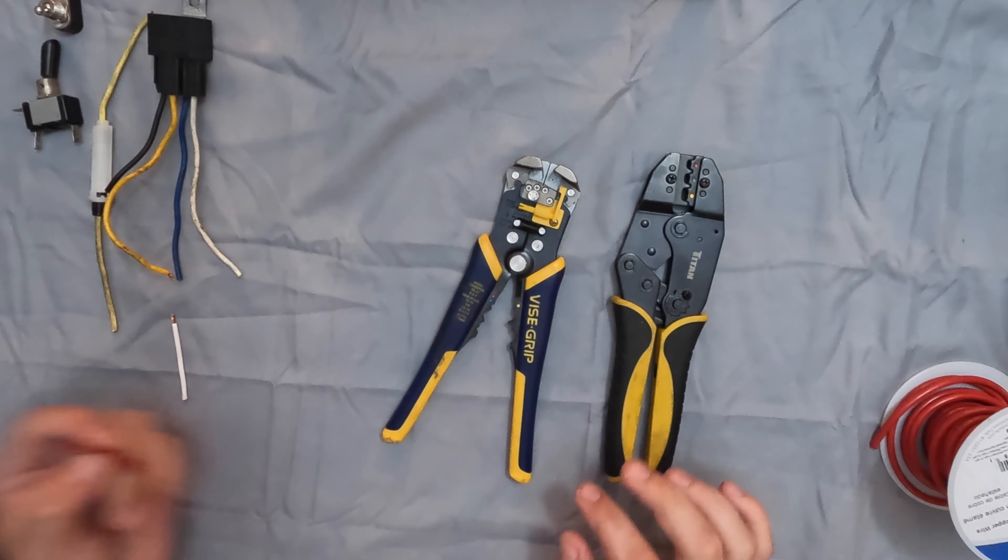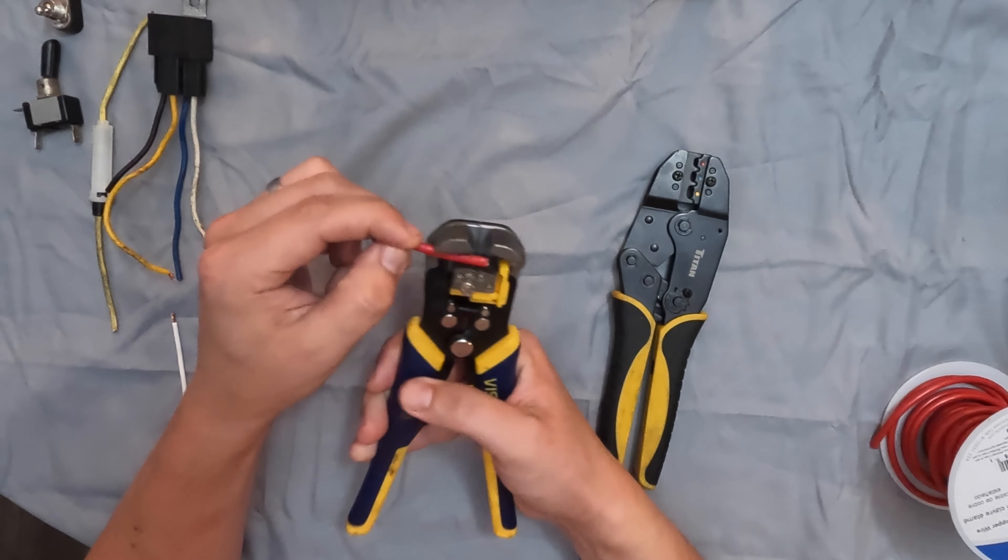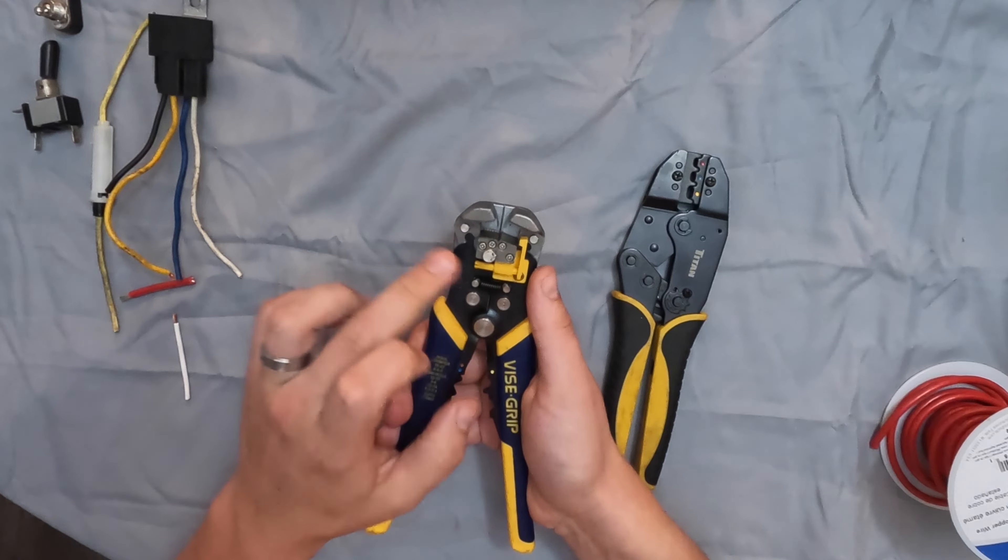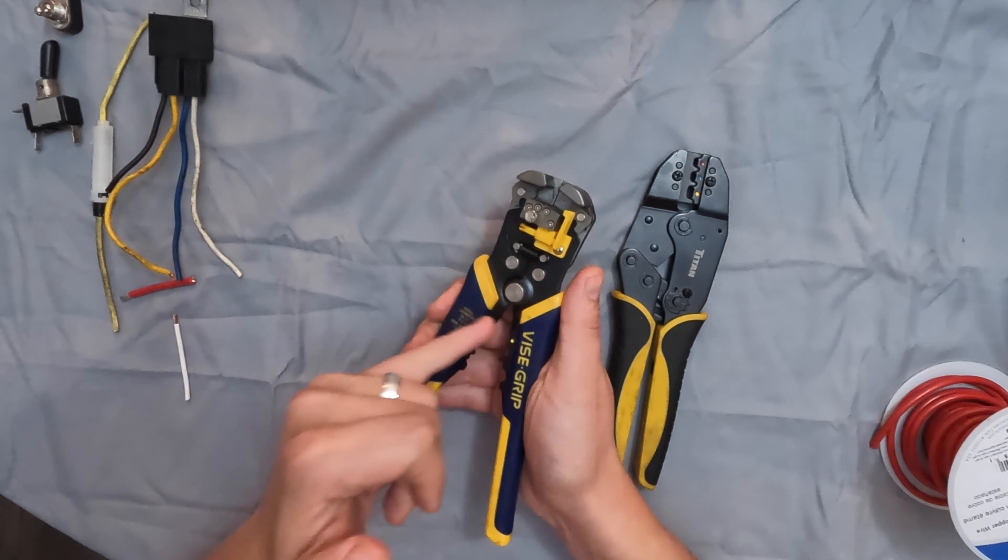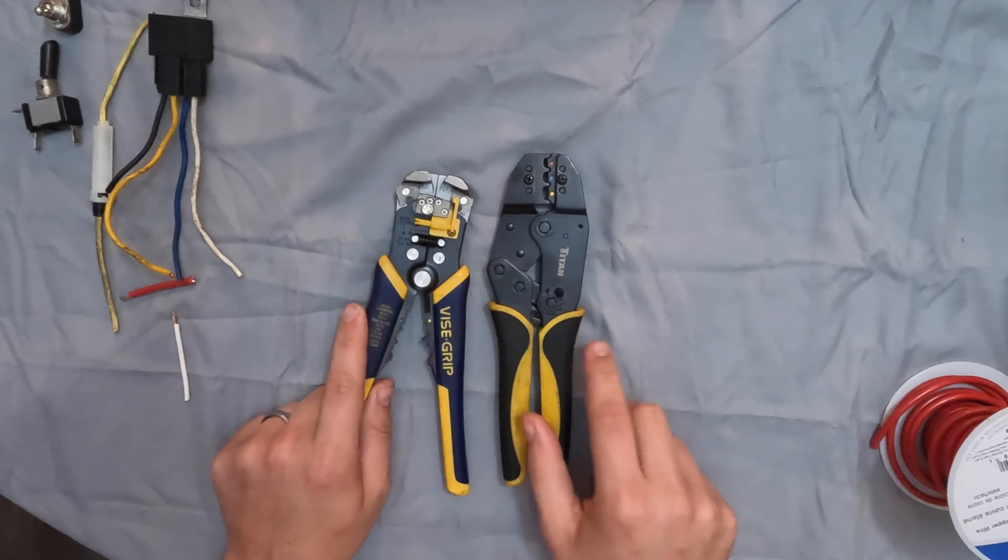And I've shown this in another video, but all you do is you just take your wire and you put it in here up to the yellow stop, clamp down, and it strips it right off. And you have all the adjustability here for different sized gauges. It's got a cutter built in and some little crimpers. But I prefer this tool for the crimping more.